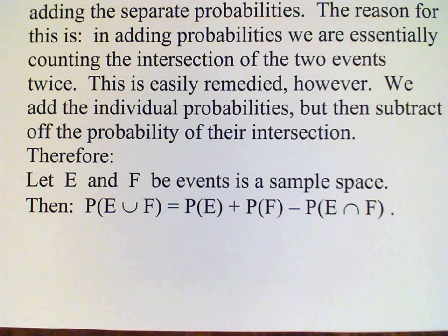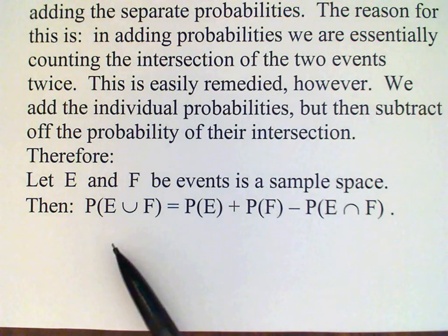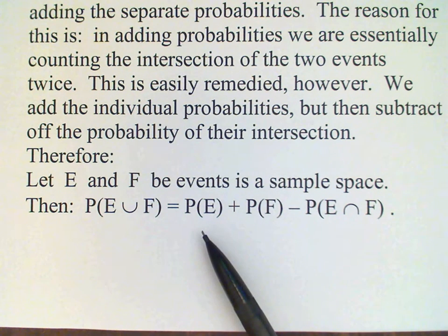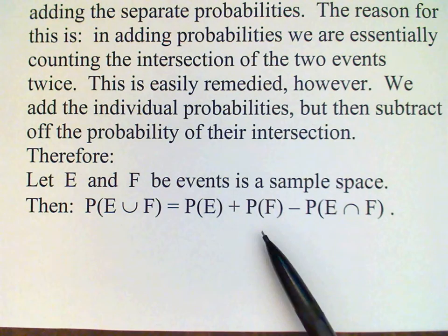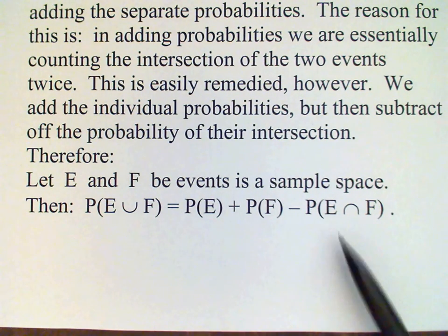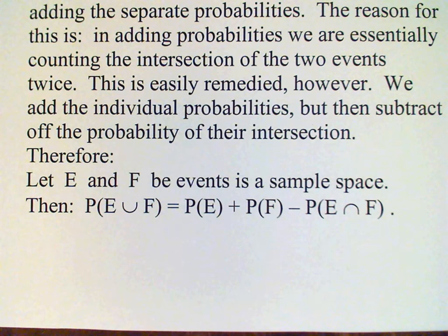So therefore in general, suppose we have two events E and F. Then the probability of the union of those two events is the sum of the individual probabilities, so the probability of E plus the probability of F, and then minus the probability of their intersection.